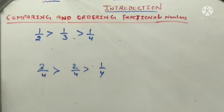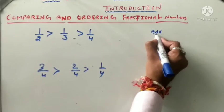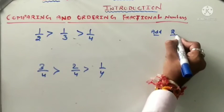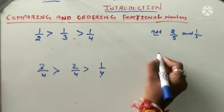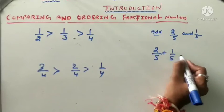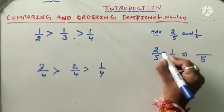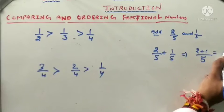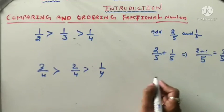Next topic is adding and subtracting fractions. For example, two upon five plus one upon five — since five is common, we keep five as the denominator and add the numerators: two plus one equals three upon five.